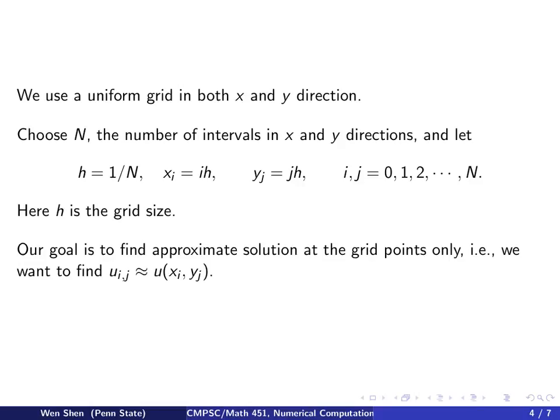Our goal is to find some discrete approximate solution to the exact solution. We will only find the approximation at the grid points. That is, we will find values u_ij, which will be an approximation to the exact solution at x_i, y_j, a particular grid point in the domain.